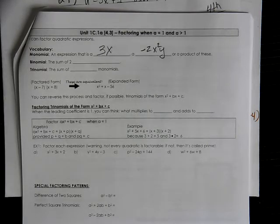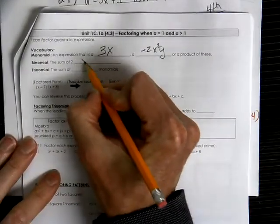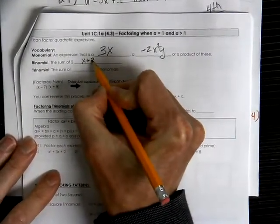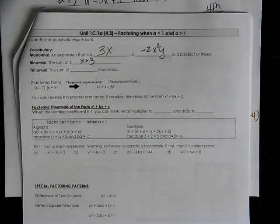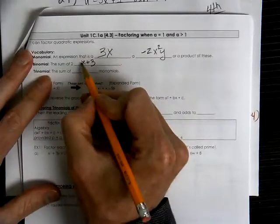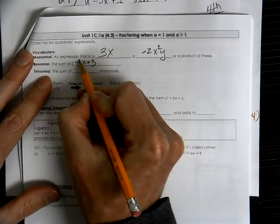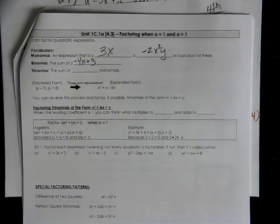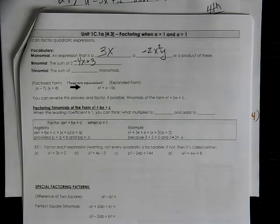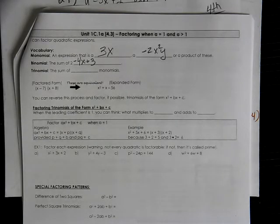A binomial is when you combine parts together. Like if you have x plus 3, that would be considered a binomial. That's two parts together. Even if you had a number in front, negative 4x plus 3, that could still be considered a binomial because it's two parts being put together.